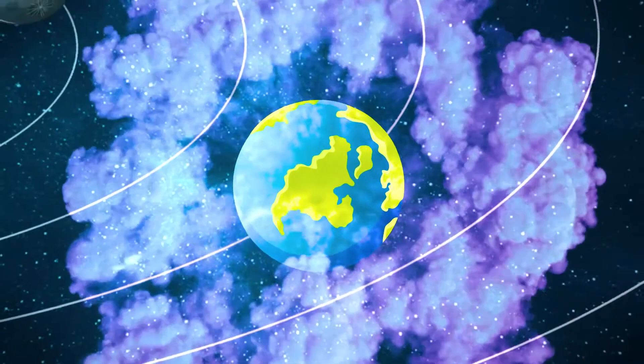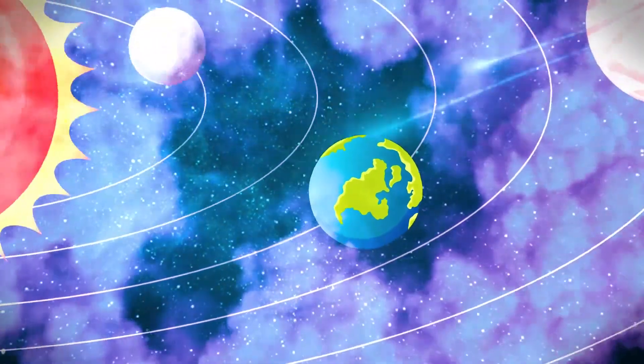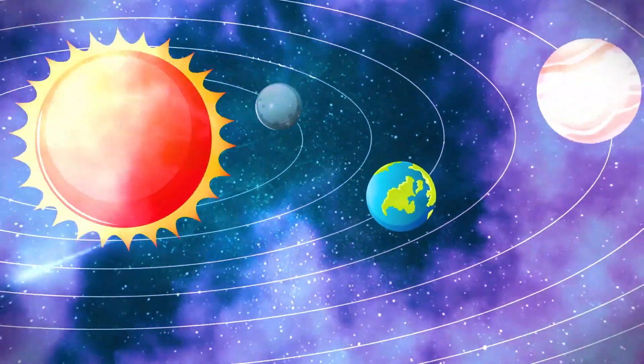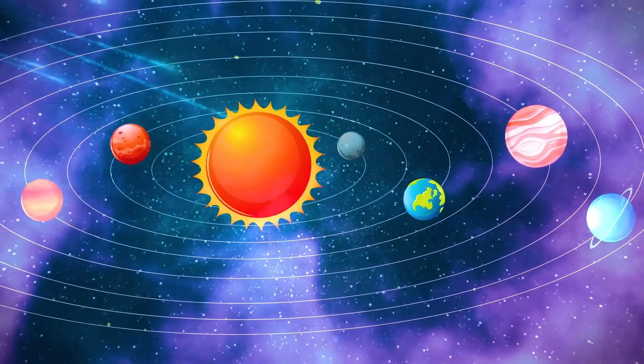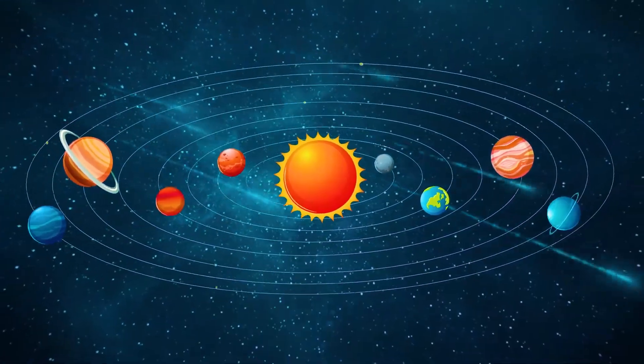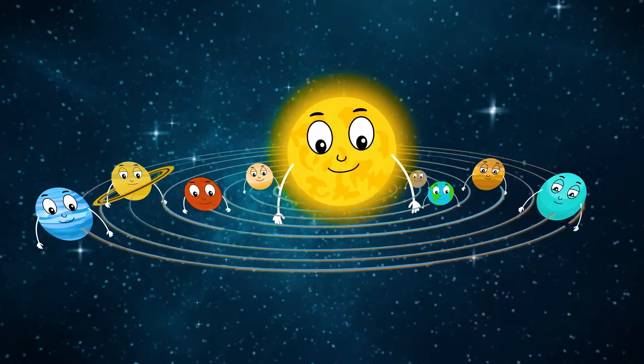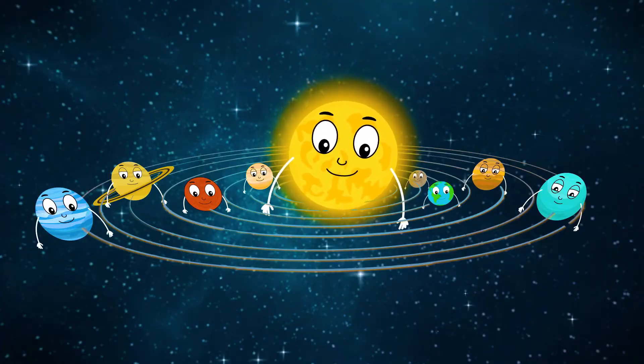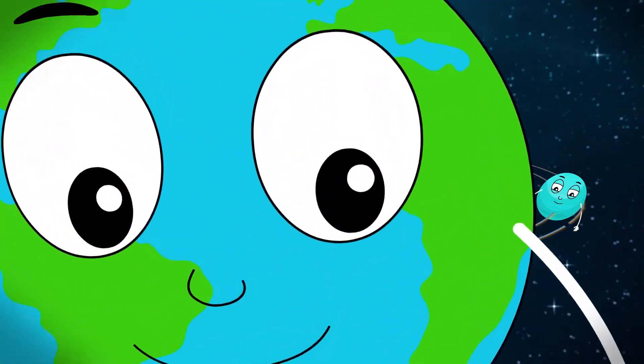Once upon a time in a big universe, Earth, along with his seven brothers and father the sun, lived in a big city called the Solar System. Earth was the third brother and the smartest amongst the eight.